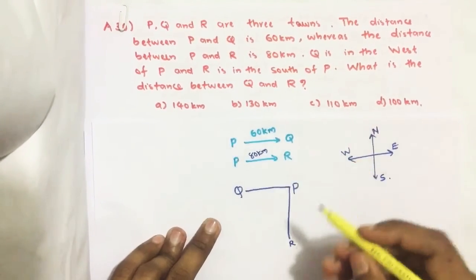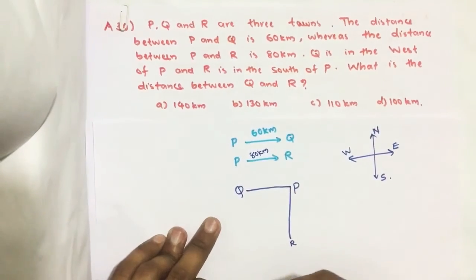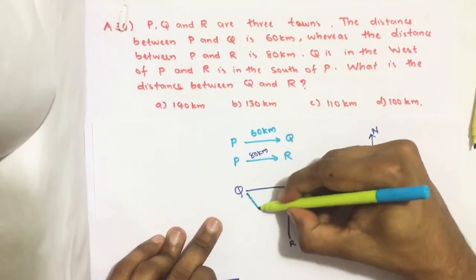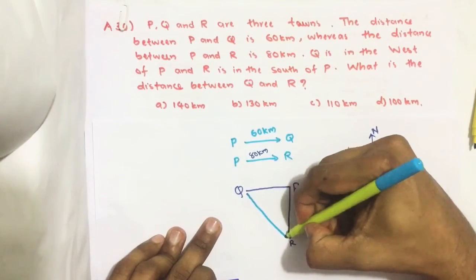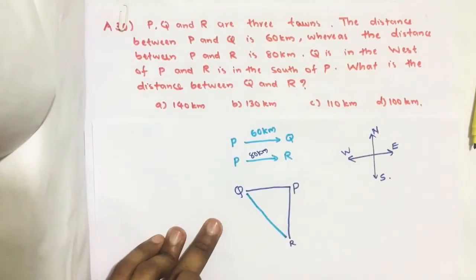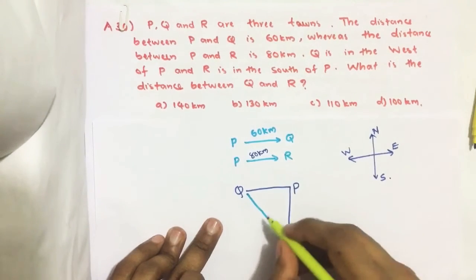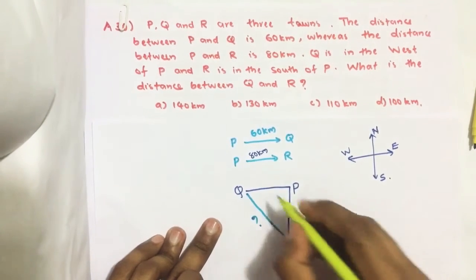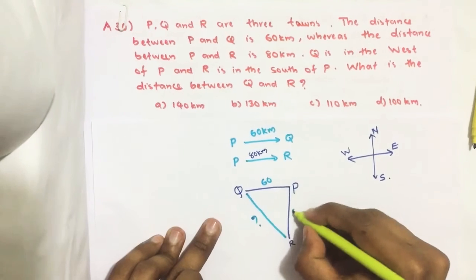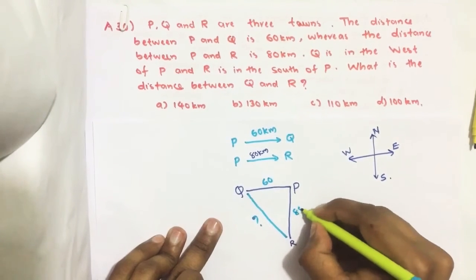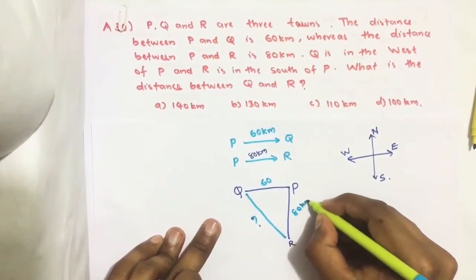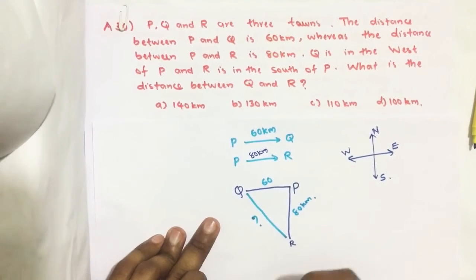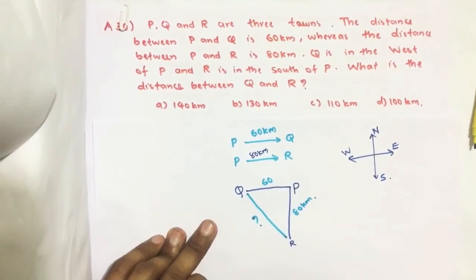What is the distance between Q and R? We have to find this distance. This side is 60 kilometers and this side is 80 kilometers — these are given. And we need to find the distance QR.